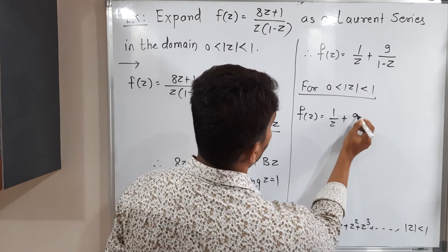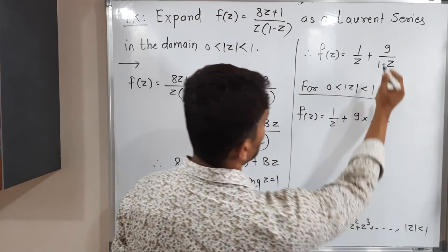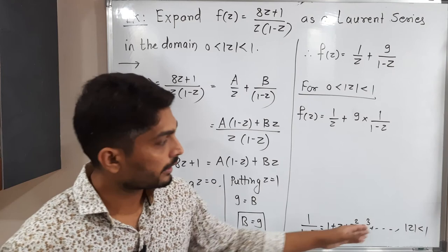That's why I will not disturb this 1 by z. 9 I am writing here. 9 into 1 upon 1 minus z. The same thing I have written but in a different way. And its expansion already we have. That condition should satisfy and that is already provided to us.